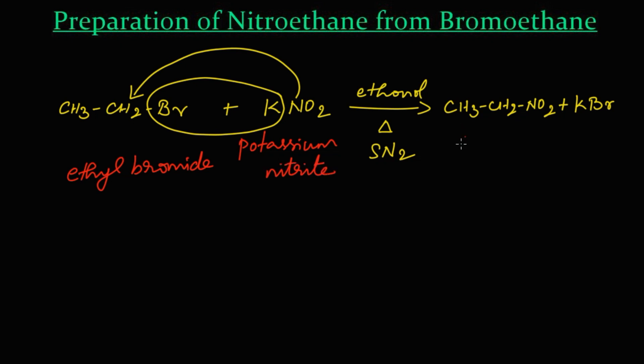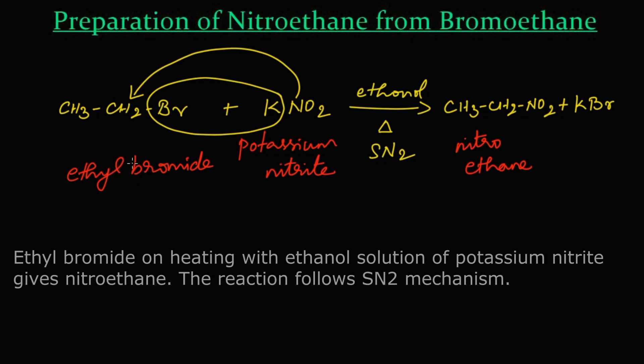We get a product called nitroethane and potassium bromide. Let's summarize the reaction. When alkyl bromide or iodide - here we are reacting ethyl bromide - reacts with potassium nitrite, the reaction takes place in the presence of ethanol.